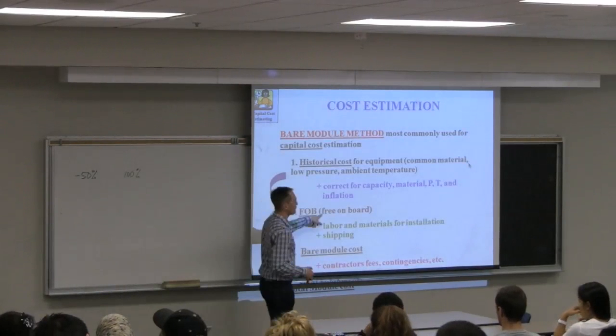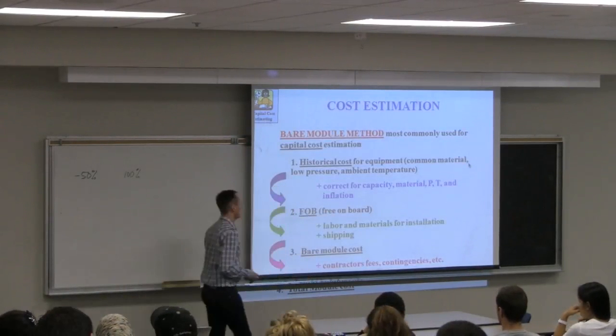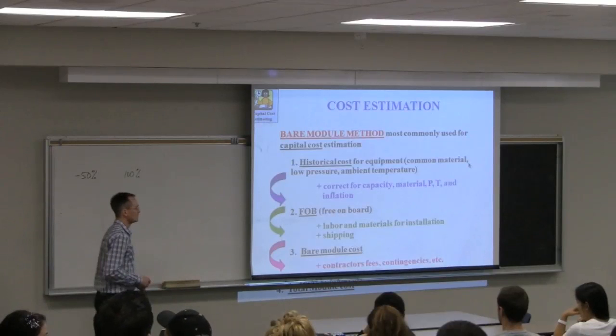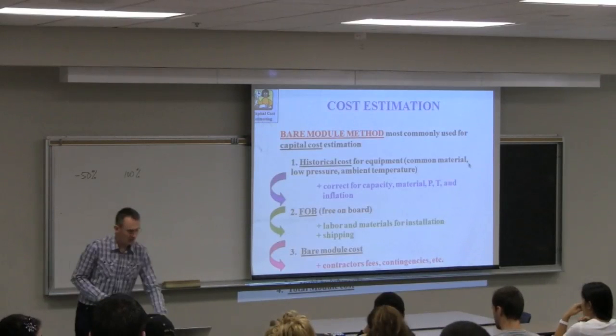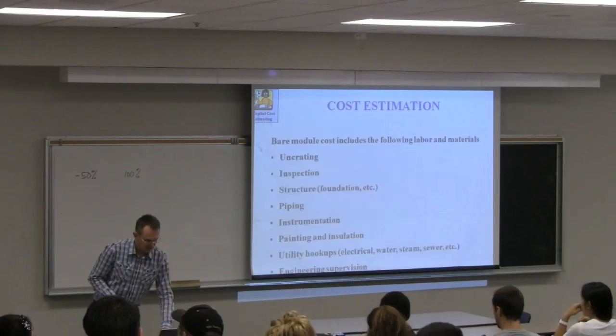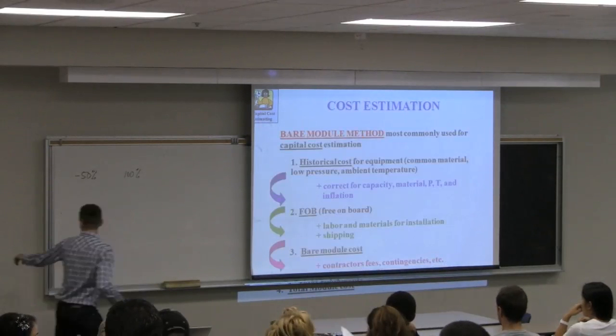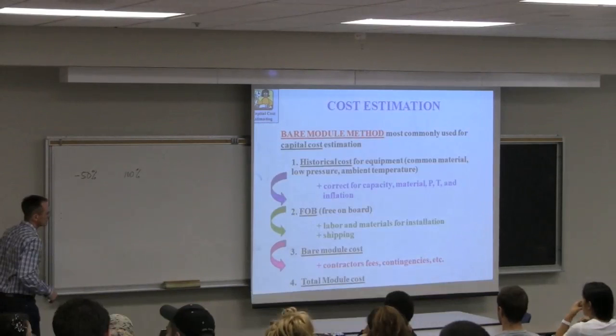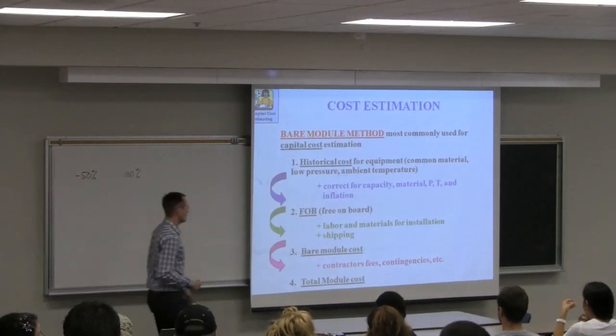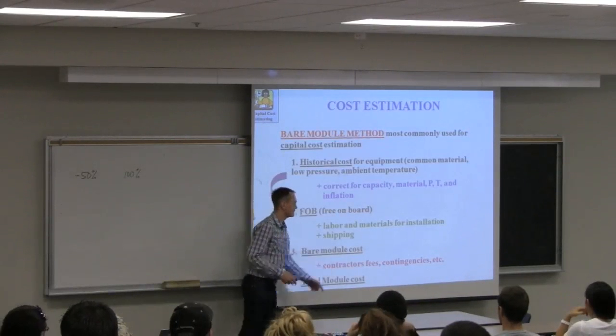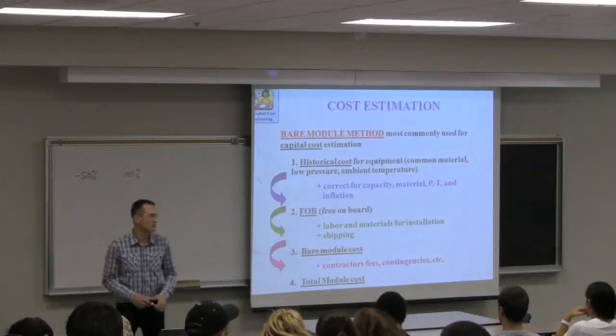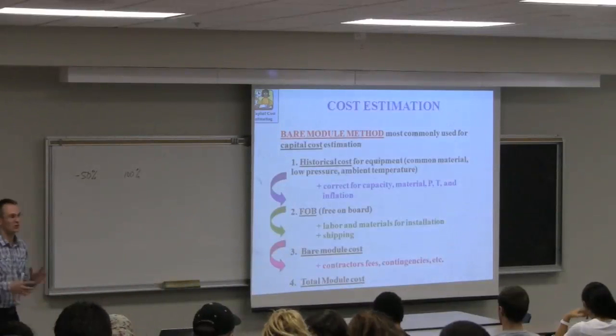Then we add in what's called free on board. I'll explain that term now in a minute. Labor, materials for installation, and shipping. And then we'll update that FOB cost and get a bare module cost, which includes the fees for contractors and contingencies. And then we'll get the total module cost.